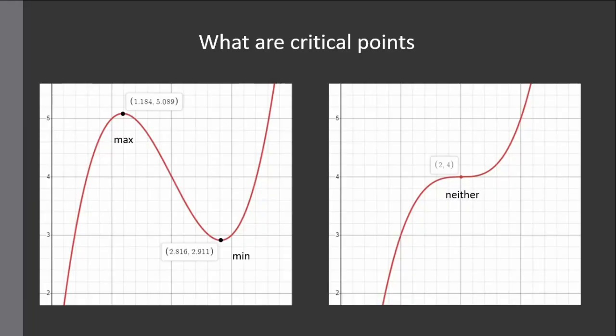So in today's video I'll give an example of when the second derivative test breaks down and I'll show you what to do instead if you want to determine the nature of a critical point. Recall that a critical point is a point on the function where the tangent slope is flat — in other words, the first derivative at these critical points is exactly zero — and when the first derivative is zero, one of three cases must occur: either this point is a max, a min, or neither.